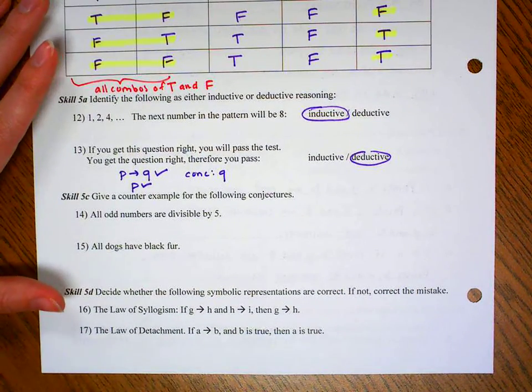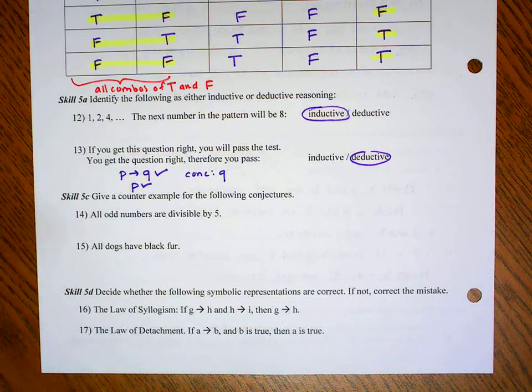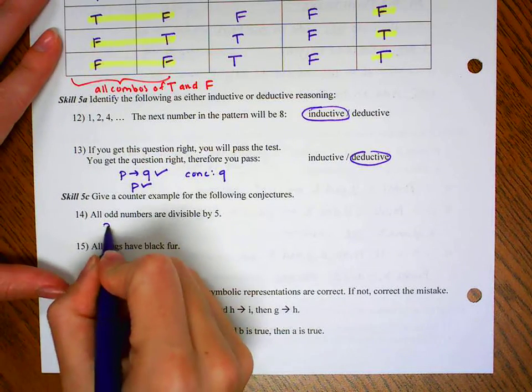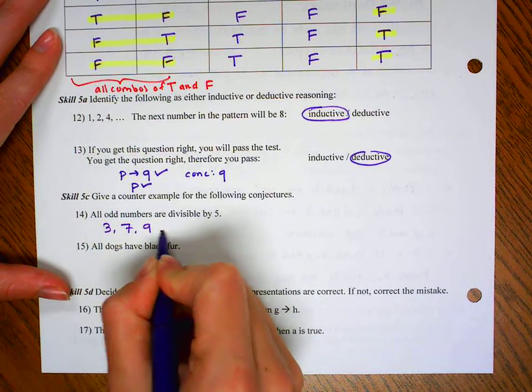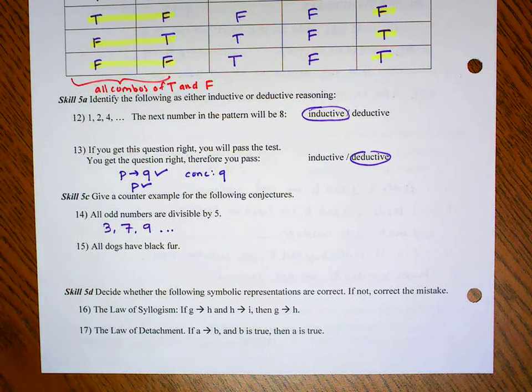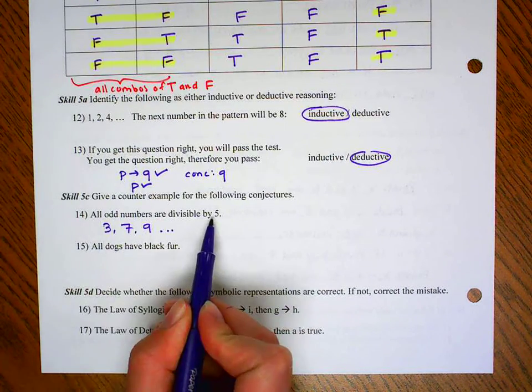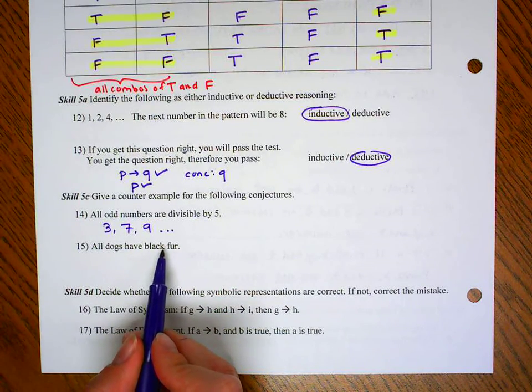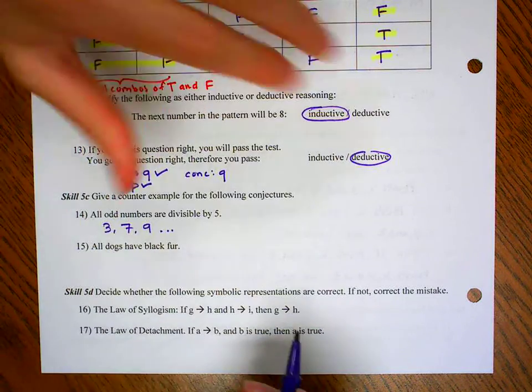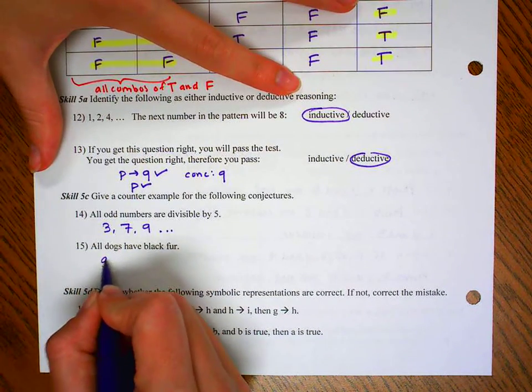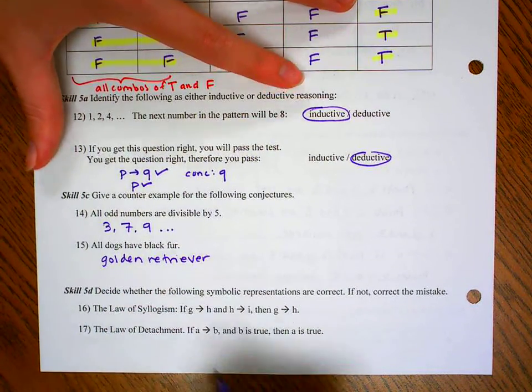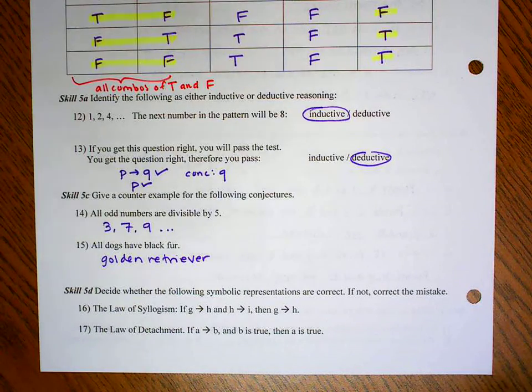Counterexamples. To do a counterexample, you need to give something that literally counters what you have. So it says all odd numbers are divisible by five. Well, that's not true because odd numbers such as three or seven or nine are odd, but they're not divisible by five. So those are counterexamples. Same thing with all dogs have black fur. We need to give a counterexample. So an example of a dog that doesn't have black fur. One example that doesn't have black fur is a golden retriever. Another example would be like a Bichon or a lot of Malteses don't have black fur.